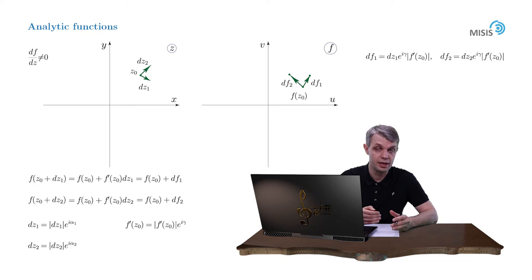And that means that the mapping implemented by our function doesn't change the angle between the vectors. Now I leave it up to you to prove that the infinitesimal circle in complex domain of z is transformed into also the infinitesimal circle in complex domain of f.